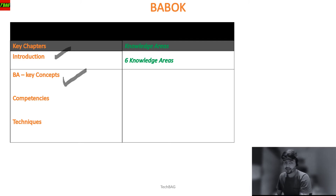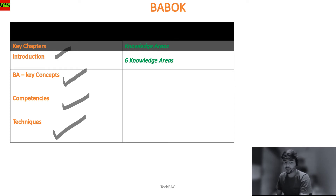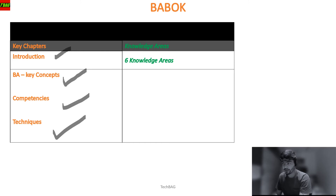In BA key concepts, the core concept called Business Analysis Core Concept is covered — we will cover that in the next videos, going chapter by chapter. Competencies is another chapter which covers business analysis key skills like analytical skills and analysis skills. Techniques are the most important chapter, covering the methods by which a BA can perform tasks. These four chapters are the key chapters, but they are very different from the knowledge areas, which are the core thing that the BABOK stands for.